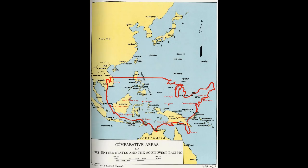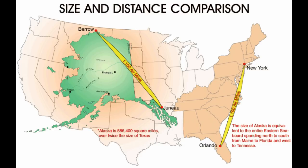This here is a size comparison — the United States and then the Philippines, the islands down there. And this is a size comparison of Canada, and Alaska to the continental United States. New York to Orlando is the same distance as Barrow to Juneau. It puts in perspective how big Alaska is.